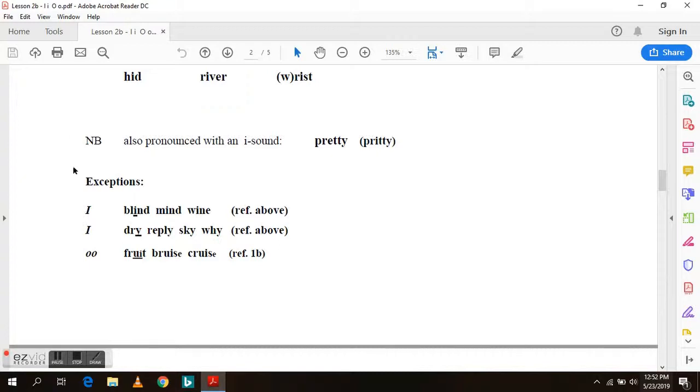And here are the exceptions. As an I sound in blind, mind, wine. The Y as an I sound in dry, reply, sky, why. And the UI as an OO sound in fruit, bruise, cruise.